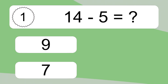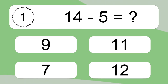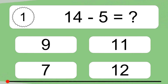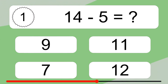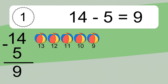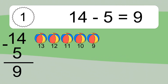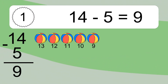14 minus 5 equals what? 14 minus 5 equals 9. Let's count it: 13, 12, 11, 10, 9.